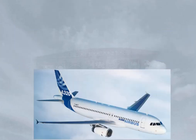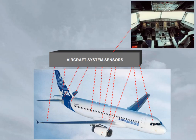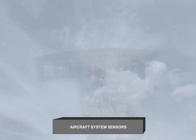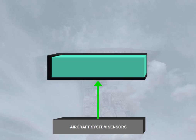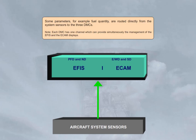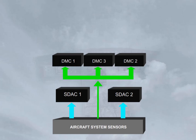Now let's look at the other EIS subsystem, the ECAM, and how the ECAM displays get their data. Sensors are installed throughout the aircraft to monitor the various systems, including system controls operated on the flight deck. Some parameters, for example fuel quantity, are routed directly from the system sensors to the three DMCs. Note each DMC has one channel which can provide simultaneously the management of the EFIS and the ECAM displays. For the majority of the systems, the sensors supply data to two System Data Acquisition Concentrators (SDACs). The SDACs acquire system data, process it, and send some of it as system page data to the three DMCs.